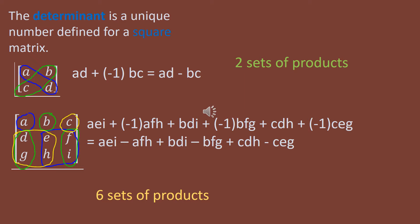For example, if I have a 2x2, A and D are both in different rows and they are in different columns. B and C are in different rows and different columns. There is also a pattern to whether or not a product should be considered positive or negative. For a 2x2 matrix, the product AD on the main diagonal will be considered positive, and the product BC on the other diagonal will be considered negative.